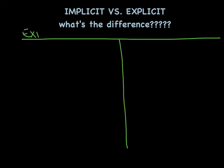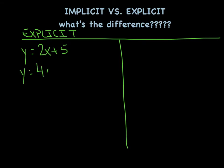Basically what that means is that y was already by itself. For instance, y equals 2x plus 5 is an explicit equation because y is being expressed explicitly in terms of x. Or maybe y equals 4x squared minus 2 sine of x. Again, that's explicit — y is by itself. It's very straightforward.